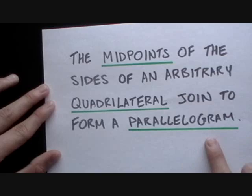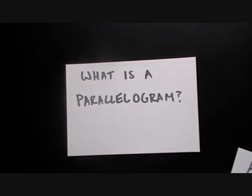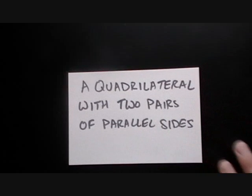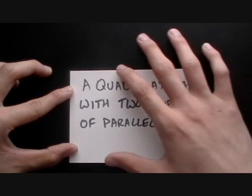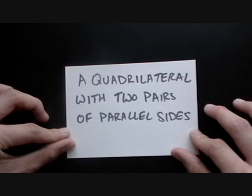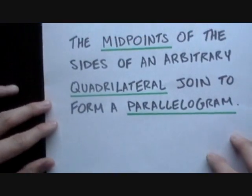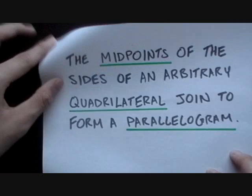Last but not least in our theorem, we have the word parallelogram. A parallelogram is a type of quadrilateral defined as a quadrilateral with two pairs of parallel sides, just like this index card here. It's a rectangle, but it does have one set of parallel sides here and another one here, giving it two pairs of parallel sides and making it a parallelogram. Now that we understand all the parts of our theorem, let's show that it actually works.